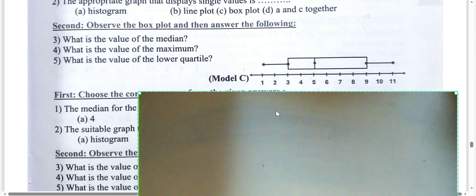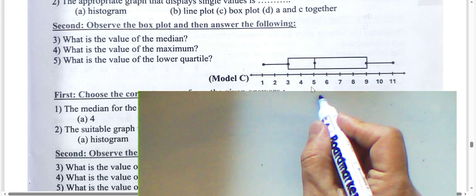What is the value of the median from the line plot? The median is five. What is the maximum value? The maximum value is 11. What is the value of the lower quartile? The lower quartile is three.